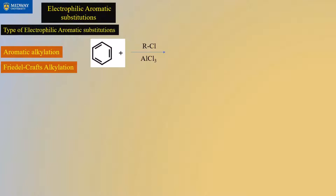Welcome back. We're going to finish up electrophilic aromatic substitutions in this video. The first one we're going to look at is Friedel-Crafts alkylation. The nature of the electrophile generated is dependent on what the R value is. R generally refers to alkyl, meaning R can be CH3, CH3CH2, CH3CH2CH2, and so on.